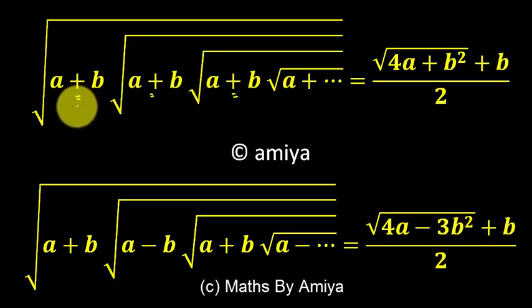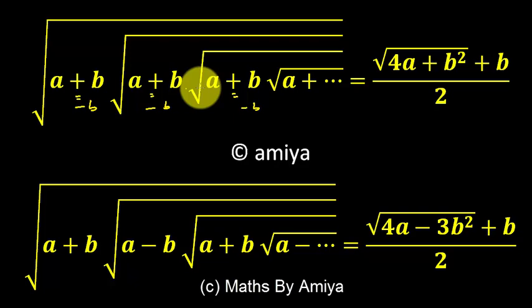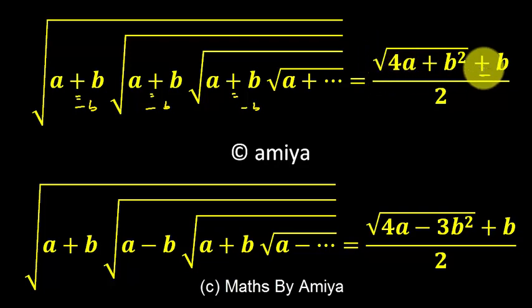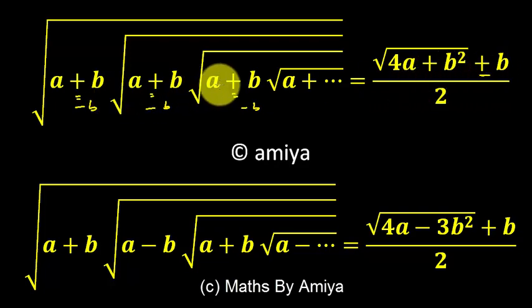One thing to remember: if all signs are minus, then replace b with minus b. If all signs are plus, then the formula uses plus b. If all signs are minus, use minus b. So: under root of (4a plus b)² plus b, divided by 2 if all are plus; and under root of (4a plus b)² minus b, divided by 2 if all are minus.